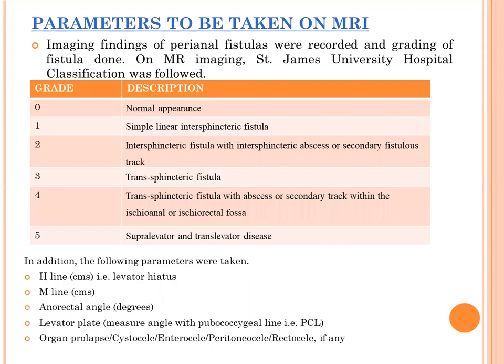We used the classification parameters based on the GEMS University Hospital classification. Grade 0 for normal appearance; Grade 1 for simple linear intersphincteric fistula; Grade 2 for intersphincteric fistula with secondary fistula; Grade 3 for intersphincteric fistula; Grade 4 for intersphincteric fistula with abscess or secondary fistula within the ischio-anal or ischio-rectal fossa; Grade 5 for supra-elevatory and trans-elevatory disease. Additional parameters used include the H-line for levator hiatus, M-line, anorectal angle, levator plate angle, and organ prolapse.